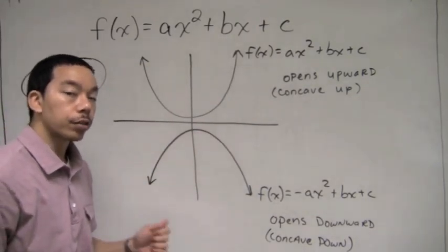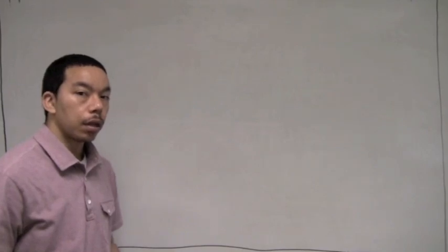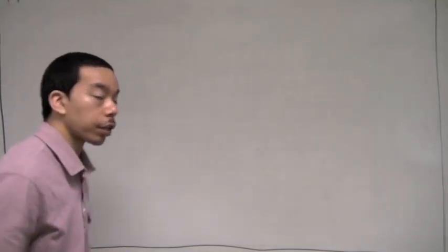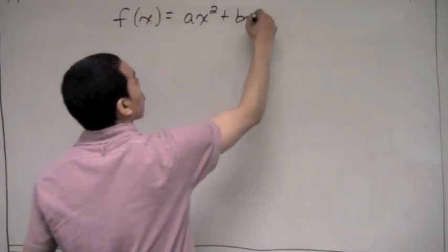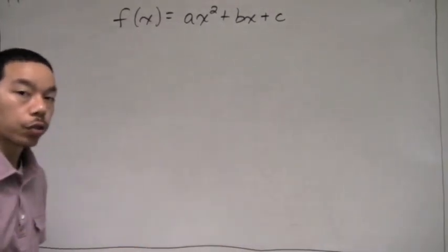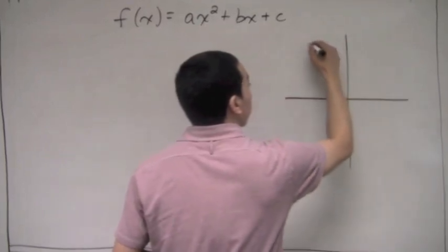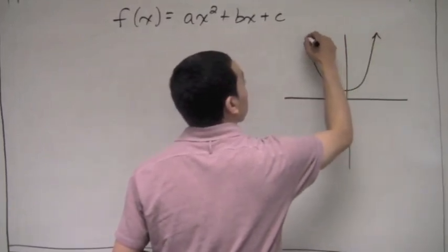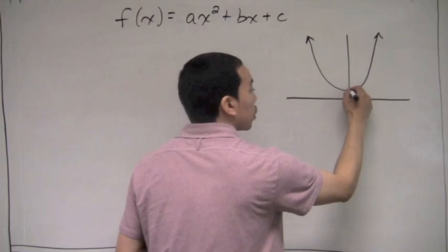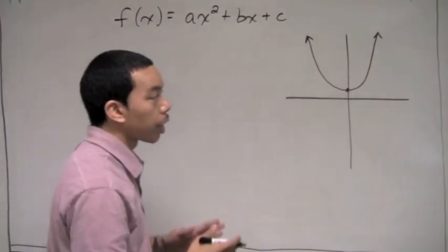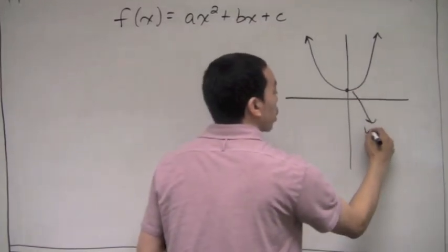Next, we'll discuss how to find the vertex of a quadratic function. We have f of x equals ax squared plus bx plus c, and the graph is a parabola. The vertex of the parabola is where the parabola changes direction — where the graph changes direction from coming down to going back up. That point is called the vertex.